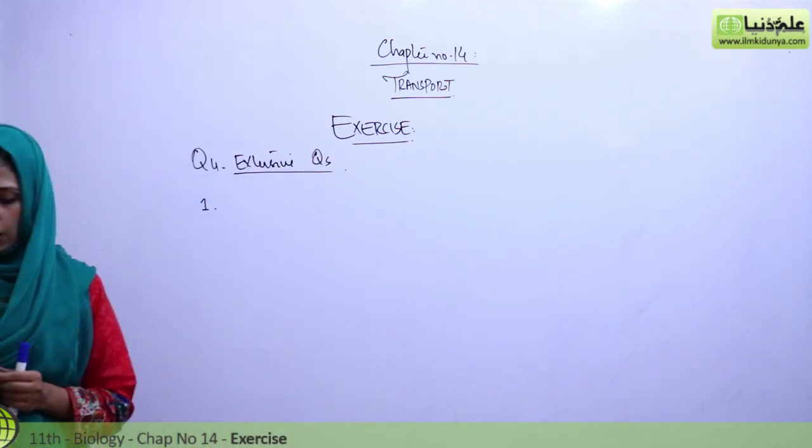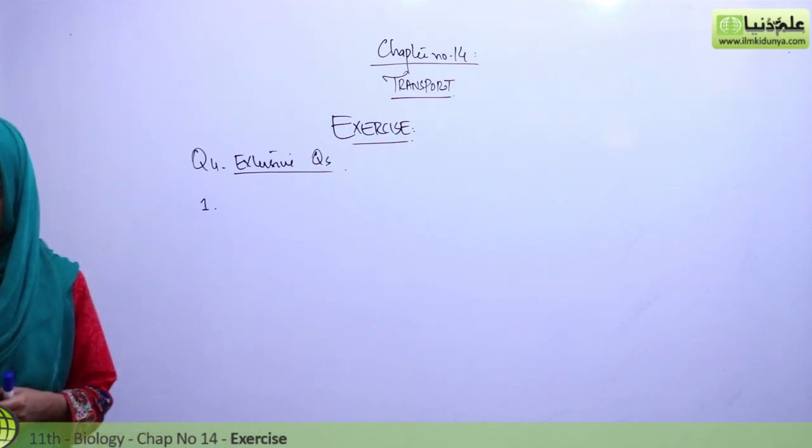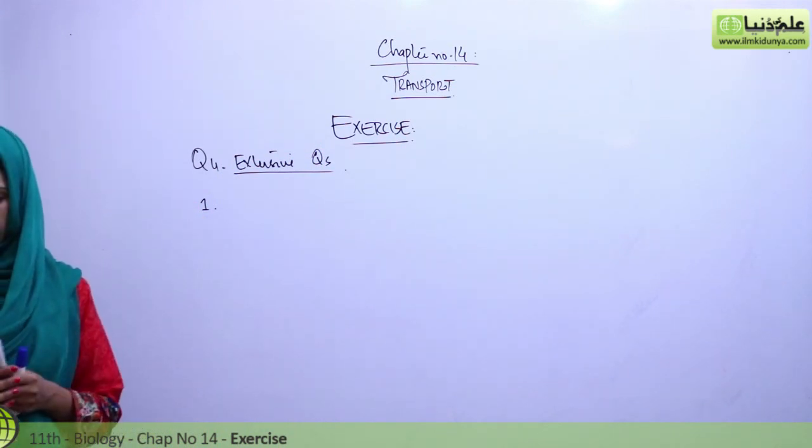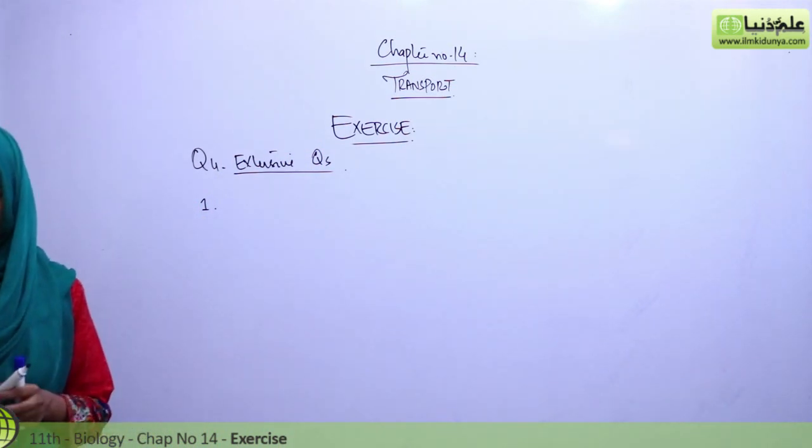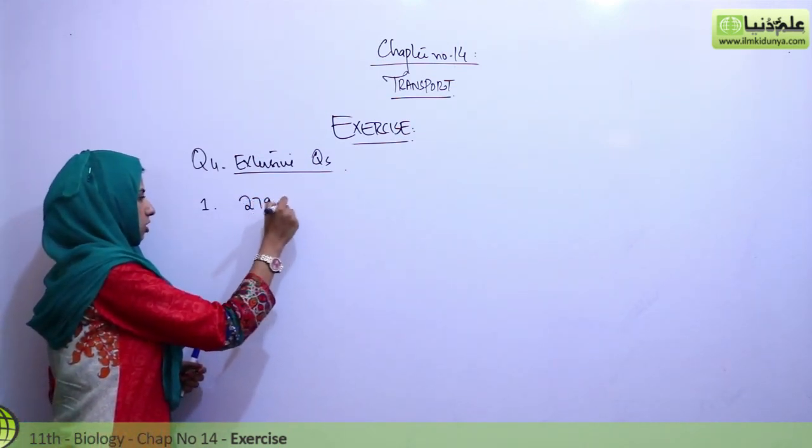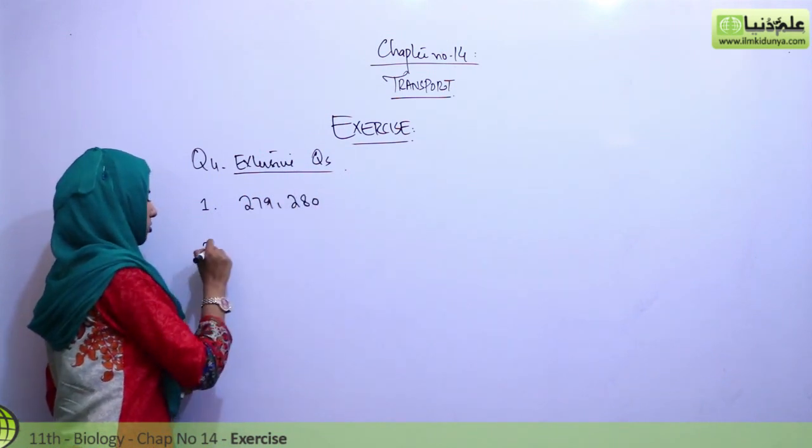First one is, how are the minerals and water taken up by roots? Draw the structures involved in the pathway for water and minerals from soil to xylem and transport process of each step. This is on page 279 or 280, starting page, you will find it.